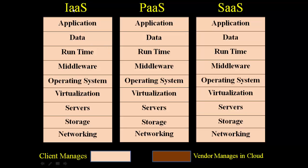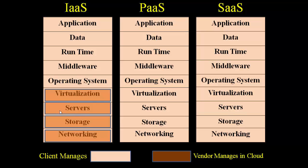Now let us have a comparison of these three kinds of services. In infrastructure as a service, the cloud provides infrastructure, which includes networking, storage, servers, and virtualization — these are managed by the vendor. The client has to manage the rest: application data, runtime, middleware, and operating system.